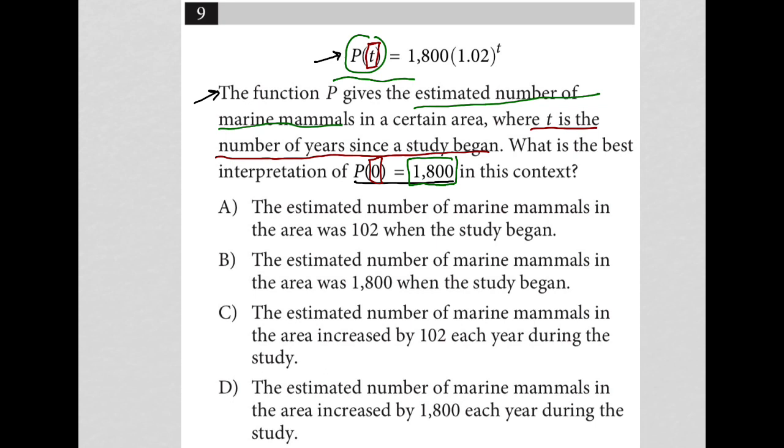So again, at the time of the start of the study, there were 1800 mammals is what this P of 0 equals 1800 means. So let's look at choice A. Choice A says the estimated number of marine mammals in the area was 102 when the study began. OK, so definitely not. Has nothing to do with 102.